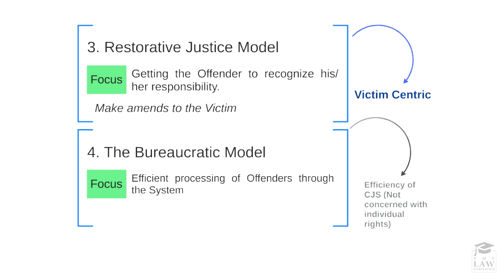The fourth model is the bureaucratic model. This focuses neither on the offender nor the victim, but on the system itself — the process — making it as efficient as possible in order to get offenders through in a logical, sequential, and proper manner. It is about the efficiency of the criminal justice system within that particular jurisdiction, and it is not concerned with individual rights.